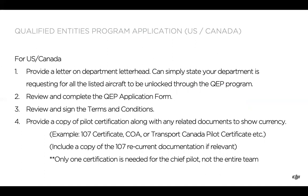Going over the application, as a few things can be a bit confusing. On the US or Canada side, you need to provide a letter on department letterhead simply stating your department is requesting all listed aircraft to be unlocked through the QEP program. Review and complete the QEP application form and terms and conditions, then provide a copy of a pilot's certificate — it could be Part 107, COA, or Transport Canada pilot certificate. You only need one of these, so if your chief pilot is filling it out, you can just provide the 107 certificate and maybe the 107 recurrent documentation for them.